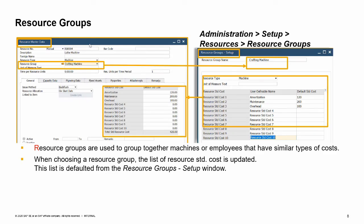Each resource type can have many resource groups, used to group together machines, employees, or other resources that have similar types of costs. Resource groups are defined on the resource groups setup window, where you can define up to 10 user-defined cost components for each group. Each cost component can be given a meaningful name. The amount entered in the default standard cost column sets the ratio of expense amount of each cost component in a journal entry made for the resource. For example, a crafting machine group with resource type machine has three cost components defined: amortization, maintenance, and overhead.